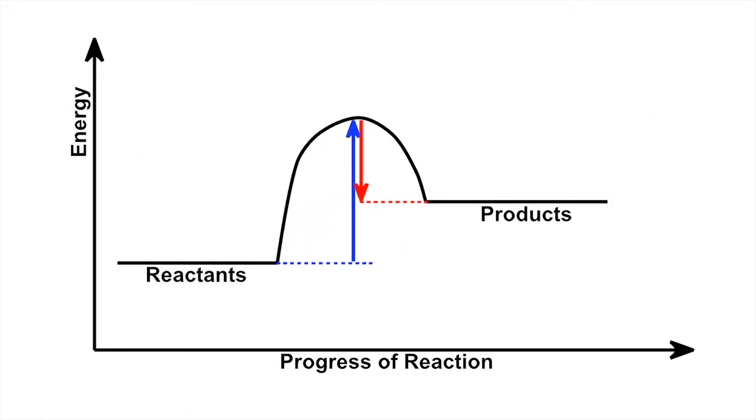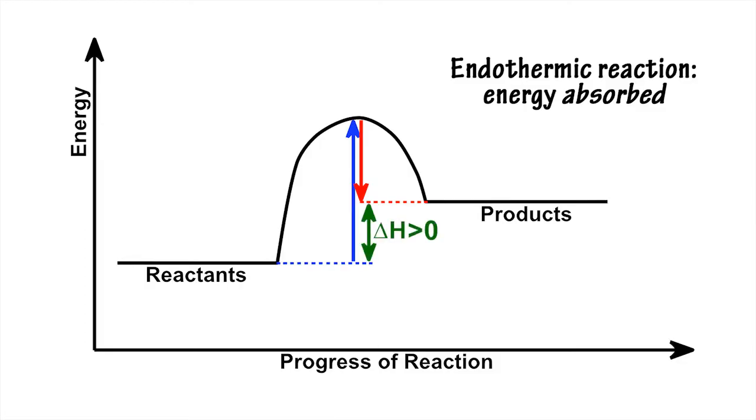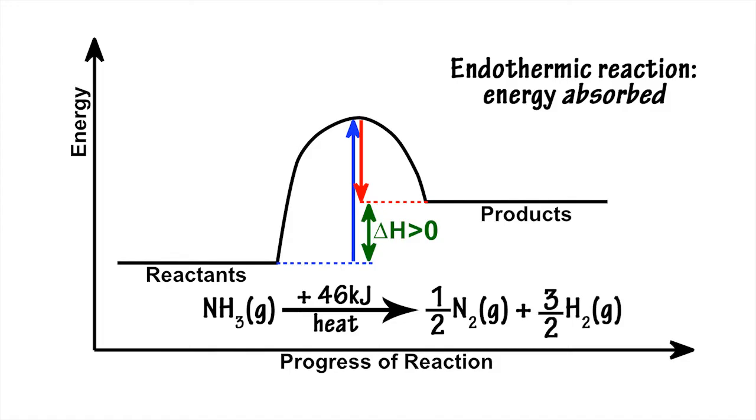Chemical reactions that absorb energy are called endothermic reactions and have a delta H figure that is positive. For example, the decomposition of ammonia into nitrogen and hydrogen has a delta H value of plus 46 kilojoules per mole.